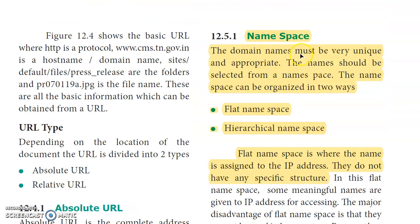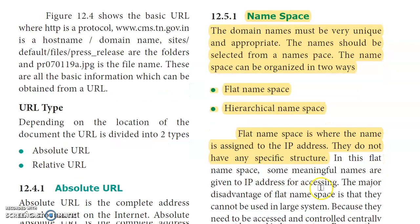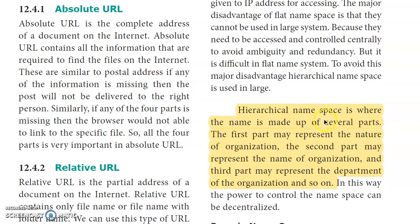First component - Namespace: In domain names, they should be unique and appropriate. Names are selected from the namespace. There are two ways to organize a namespace: flat namespace and hierarchical namespace. In hierarchical namespace, a name has multiple parts - the first part represents the nature of the organization, the second part is the name of the organization, and the third part is the department of the organization.